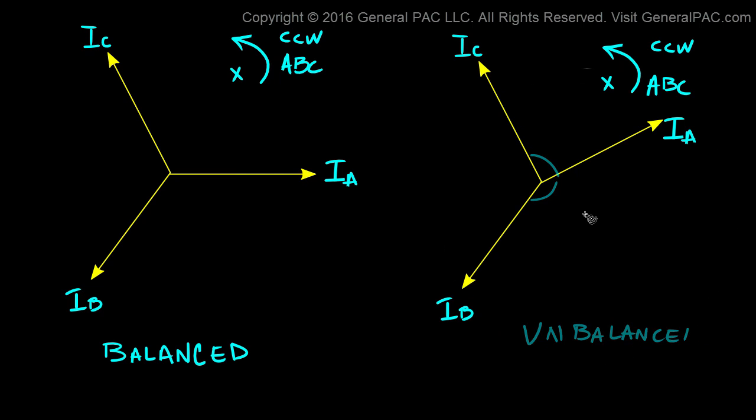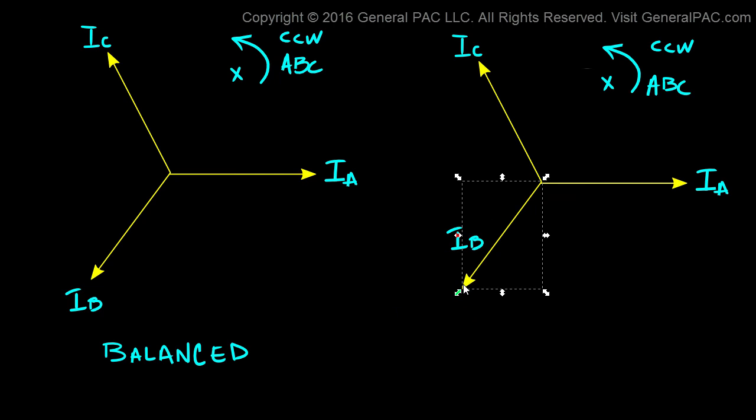Now let's put it back to where it was before. What if the magnitude of IB suddenly shrunk? So now IB looks something like that. The angle between IB and IC, well that's 120 degrees, and the angle between IB and IA, well that's also 120 degrees.